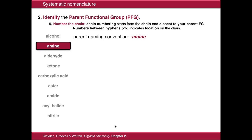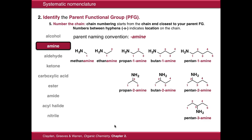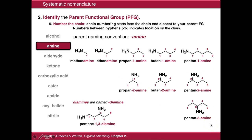Amines have the naming convention -amine. So we have methanamine, ethanamine, propan-1-amine, butan-1-amine, and so on. We can have various isomers thereof — propan-2-amine just has the amine group at the two position, as opposed to propan-1-amine where it's connected to the one position. If you've got two amine functional groups in your molecule, they're called diamines and it follows the same rules as with alcohols — so this is pentane-1,3-diamine.